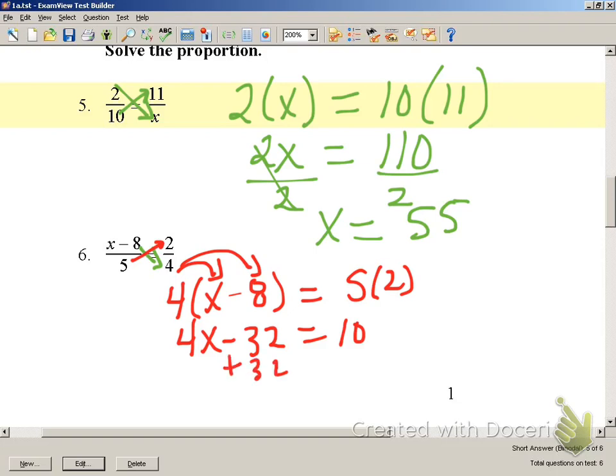We're going to add 32. So we have 4X is equal to 42.